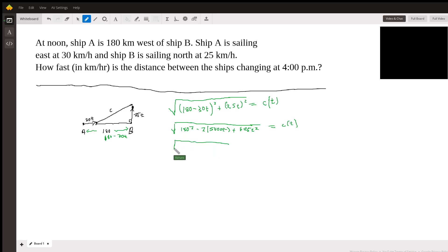And so just cleaning this up, 625T² plus 900T² is 1,525T² minus 10,800T plus 180 squared, which is 32,400, equals c(t).